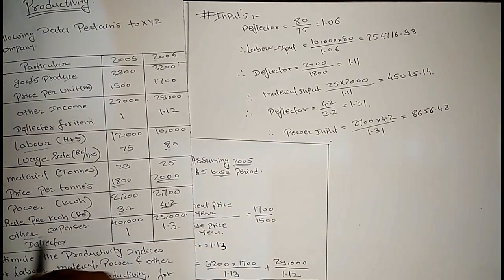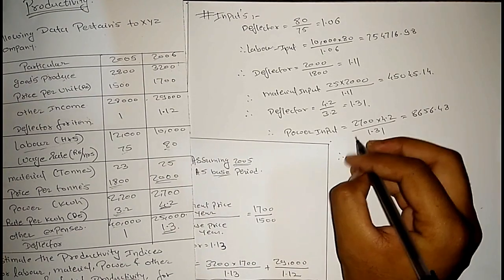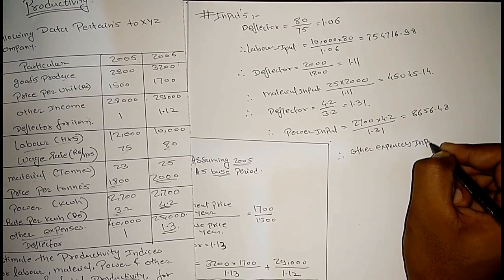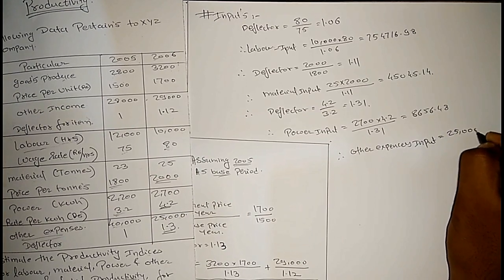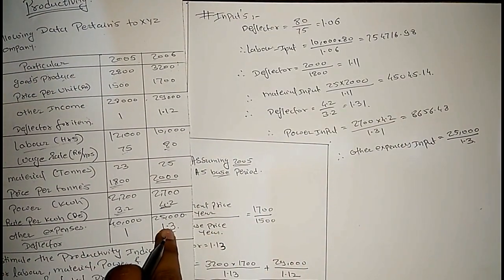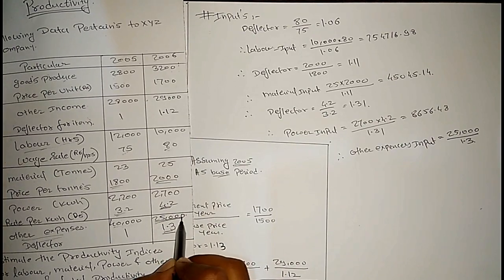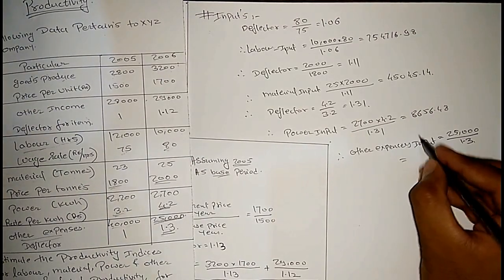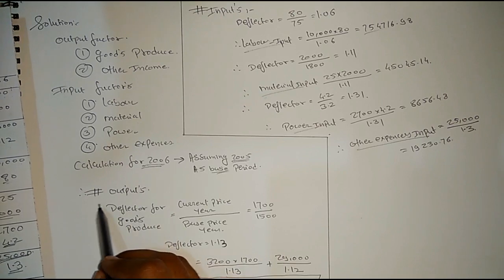Now calculate the input for other expenses. The deflector for other expenses is already given as 1.3. Therefore, other expenses input equals 2500 divided by 1.3. Since the deflector is directly given, we just divide the other expenses value by the deflector. Other expenses input equals 19,230.76.